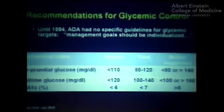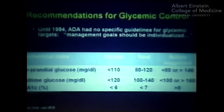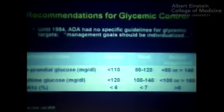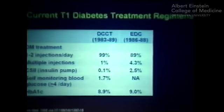Shortly after the DCCT results were available, the ADA and other organizations issued clinical guidelines — almost identical to what's in use today. Now we have a target A1C of less than 7%, and targets for preprandial and bedtime glucose levels. For the first time, physicians and patients had standards and goals for achievement of glycemic control.